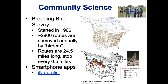Some long-term data comes from community science. One of the best examples is the Breeding Bird Survey, which was started in 1966. There are 2,900 routes that are surveyed every year by birders — people that are excited about birds. They commit to go out and collect this data every year, and it's become very useful for understanding changes in population dynamics of different bird species.